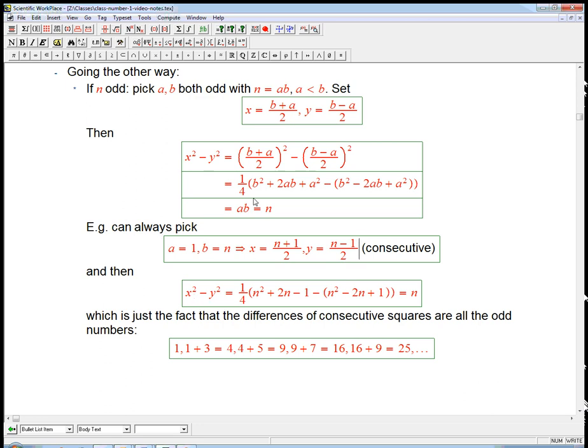It's just n/2 ± 1/2 is another way to say it. They're the consecutive numbers that lie right around n/2. And then, just redoing this calculation in a slightly simpler form, x² - y² = n.